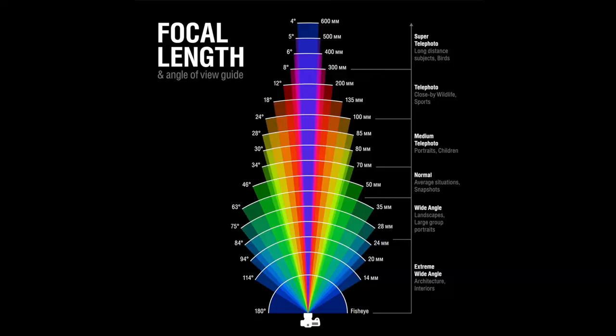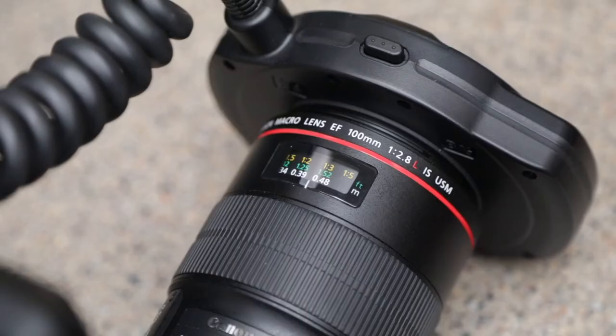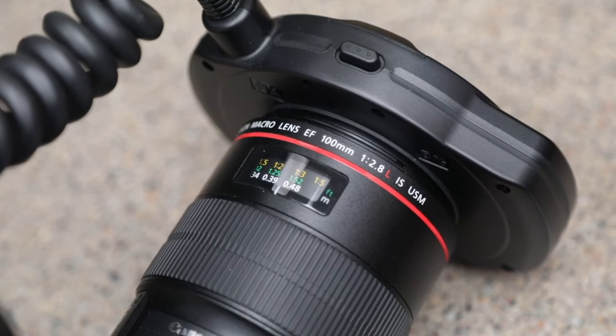Another way to affect the depth of field is by using different lenses with different focal lengths. The focal length is the distance between the camera sensor and the optical center of the lens. I use a 100mm focal length lens in dentistry, meaning the distance from the camera sensor to the optical center of the lens is 100mm.